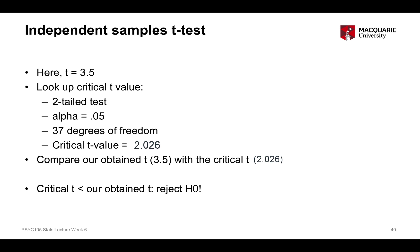Rejecting the null hypothesis means that the likelihood of obtaining this particular t-statistic — this particular difference between the means with this particular variability — if the null hypothesis were true, is very unlikely. Therefore we conclude that we are picking up on a real difference between the two groups, meaning our two means are significantly different.